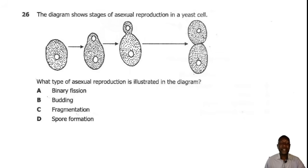Question 26. The diagram shows stages of asexual reproduction in a yeast cell. What type of asexual reproduction is illustrated in the diagram? Here in the diagram, we can see the yeast cell dividing by forming a small outgrowth. And we have an outgrowth here which later grows and then divides. So this small outgrowth is what is known as a bud. So the process is known as budding. The correct answer is B.